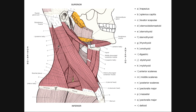Muscle B is another one of our posterior neck muscles — this is splenius capitis. Recall that splenius capitis was in the deep layers of the posterior neck. There are splenius capitis and splenius cervicus. Capitis was the one that inserted on the occiput, going all the way up to the base of the skull, and it was involved in neck extension.